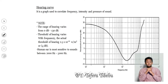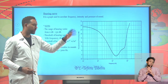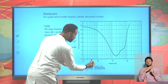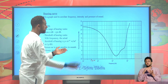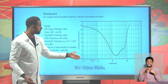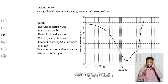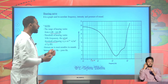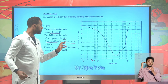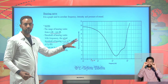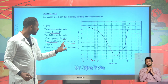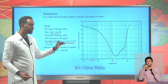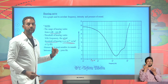The hearing curve is used to correlate frequency, intensity, and sound, as well as the pressure of hearing ability. For human beings, the hearing range varies from 20 Hz to 20,000 Hz. The range of hearing varies from 0 decibels to 130 decibels. The actual threshold of hearing of the human ear is 2.5 × 10⁻¹² W/m². This graph, which you can find in your textbook with all the numbers, is what we call the hearing curve.